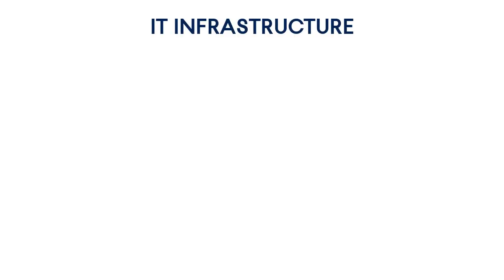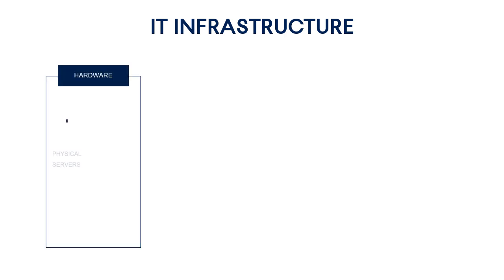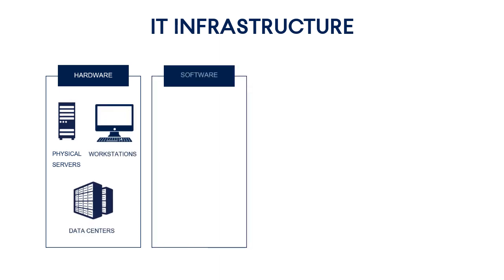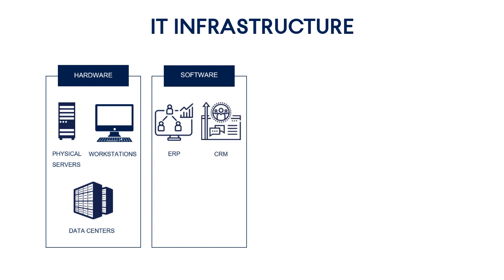Typically, a standard IT infrastructure consists of the following components. Hardware: servers, workstations, data centers, and other equipment. Software: enterprise resource planning systems, customer relationship management systems, and productivity applications, and so on.